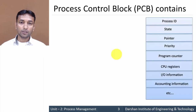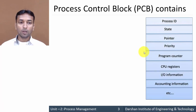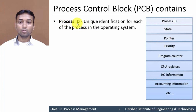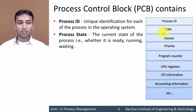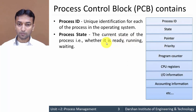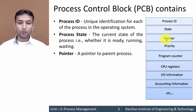Now let's look at what a Process Control Block contains — the different fields of a PCB. The first field is Process ID, which is the unique identification for each process in the operating system, used to uniquely identify every process. The second field is Process State, which stores the current state of the process — whether it is in running, ready, waiting, or blocked state.